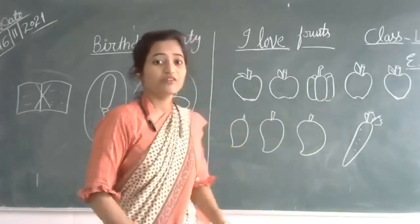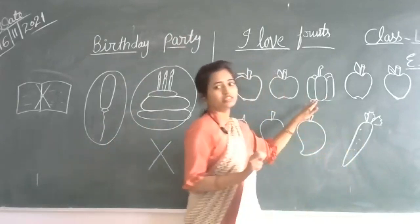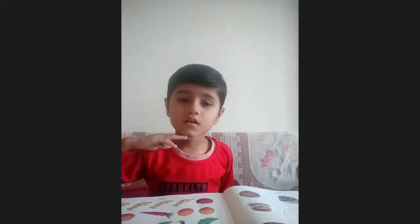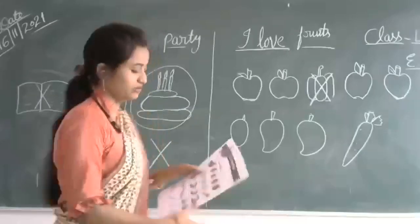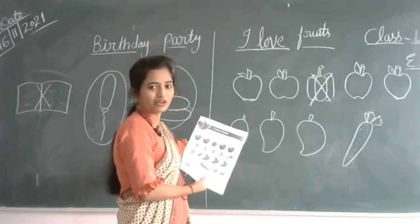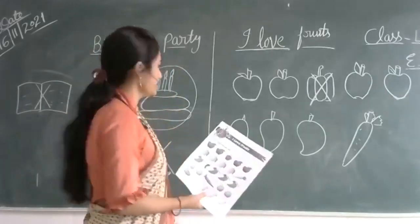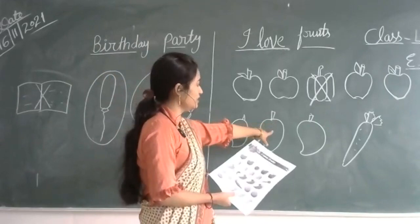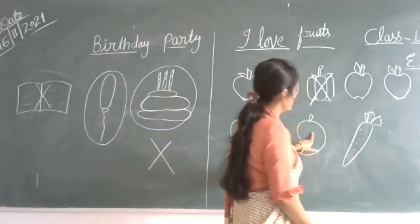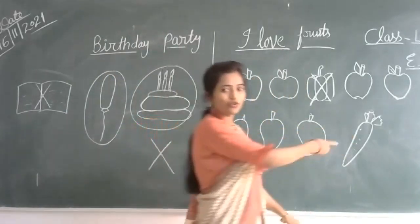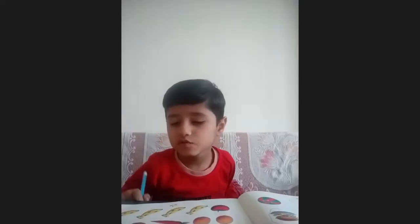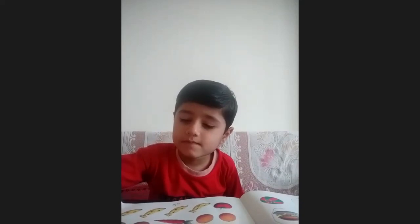What is this? It is not food. So what is this? It is a capsicum. This is a capsicum — so cross it. Done. Next — mango. Mango is a fruit. Yes. And next one — radish. Radish is not a fruit, so cross it.